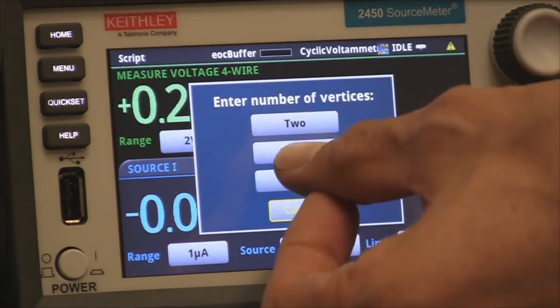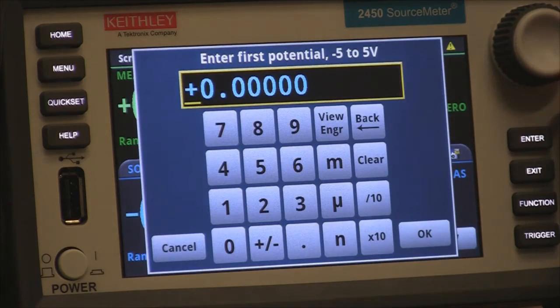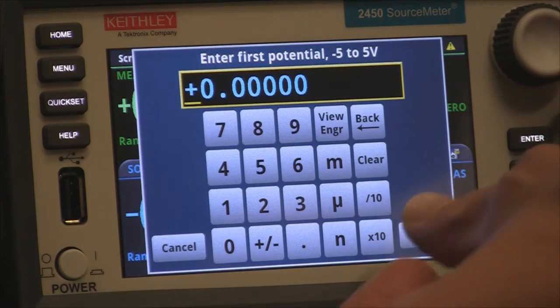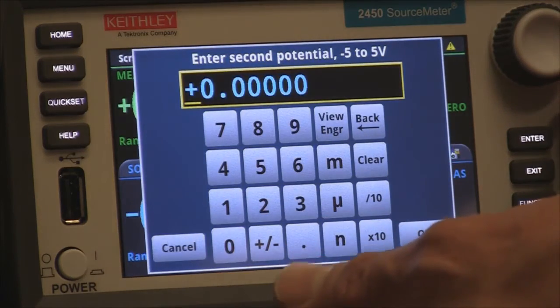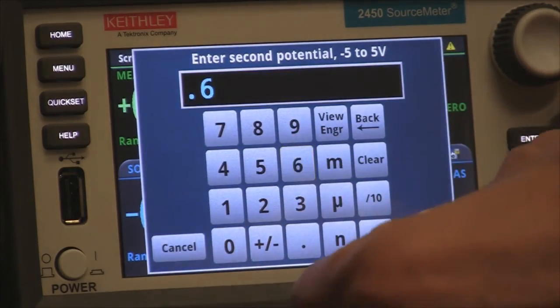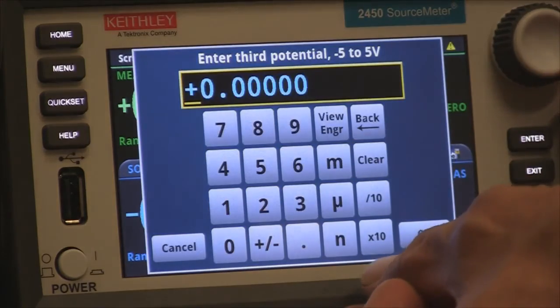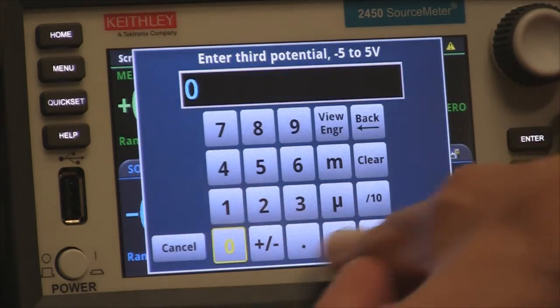The number of vertices that we want here is three. The first potential we're going to select zero versus the ref. For the second potential, we're going to select 0.6 for this chemistry. Again, versus the reference. And the third potential, we're going to go back to zero.